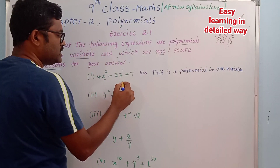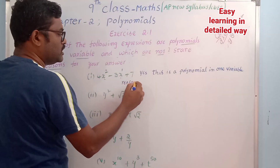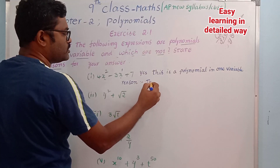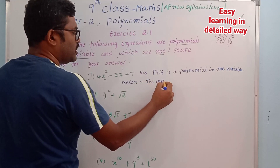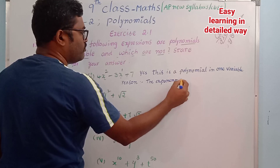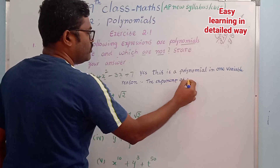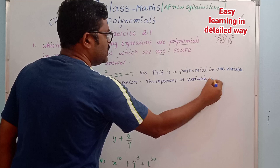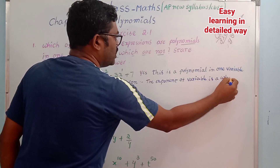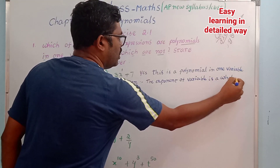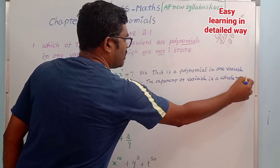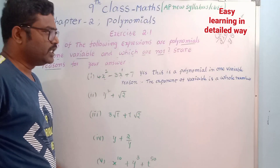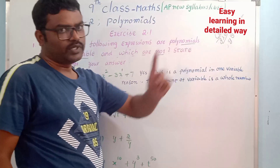The reason is that the exponent of the variable is a whole number. So this is a polynomial in X, and since the exponent is a non-negative integer, this is correct.